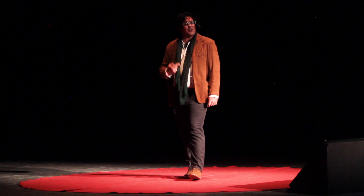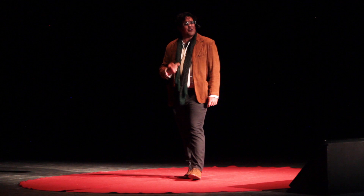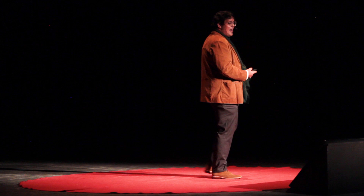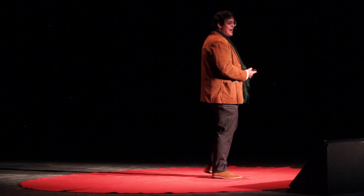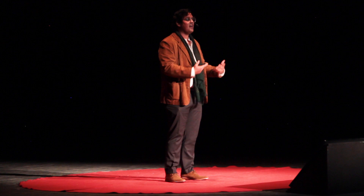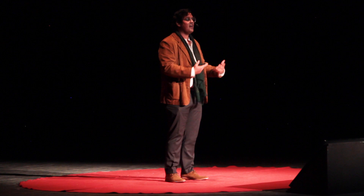But what would happen if the artist's purpose is to actually change the program to become an artist itself? I would like to recall the words of American philosopher John Searle, who says that the appropriately programmed computer with the right inputs and outputs would thereby have a mind in exactly the same sense human beings have a mind — the correct simulation is a mind. I Am the Painting Fool is going to be a computer program created by Simon Colton that is going to be exploring the concept of identity by becoming an artist for itself. Let me read this very dismal self-description of the computer program.